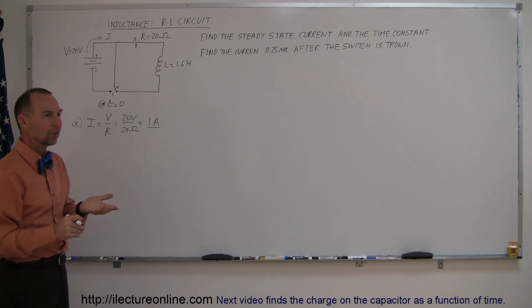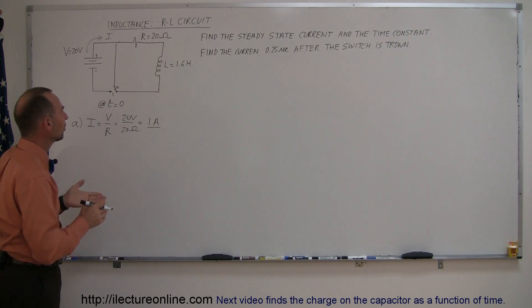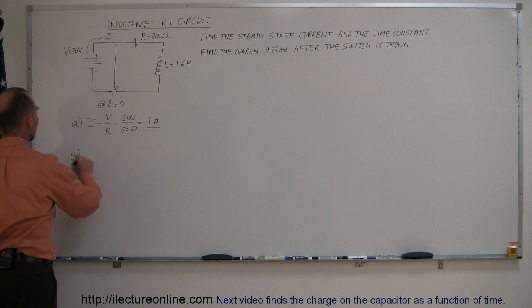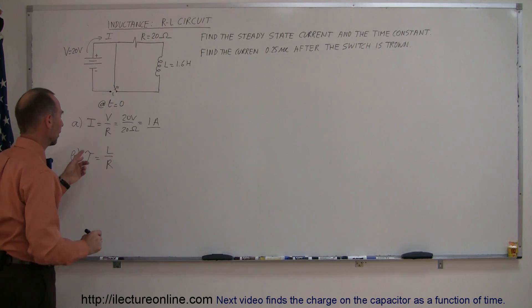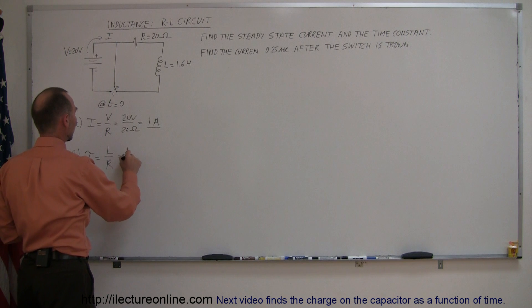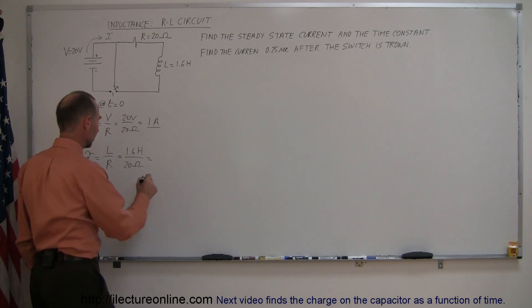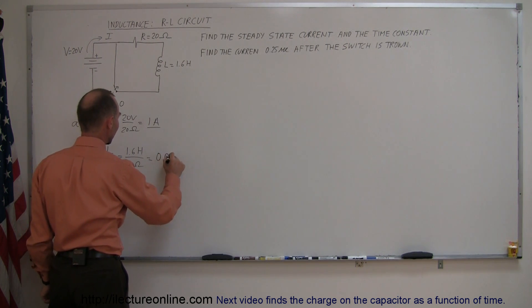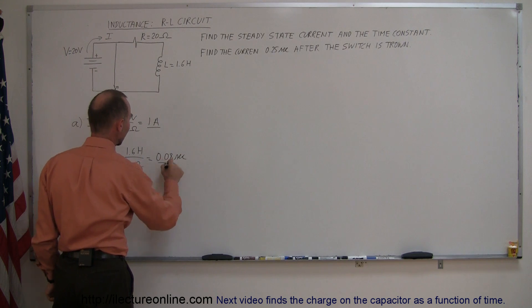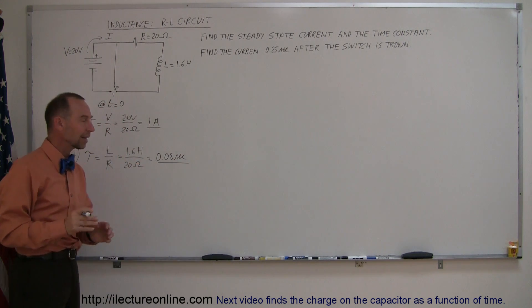The time constant that is relevant to the circuit can be found by saying that tau is equal to L over R. L is inductance which is 1.6 henries, resistance is 20 ohms, and so this is equal to 0.08 seconds. So eight one-hundredths of a second is one time constant in the circuit.